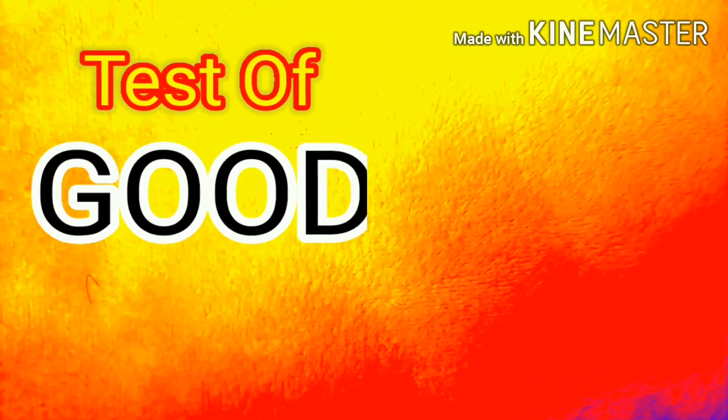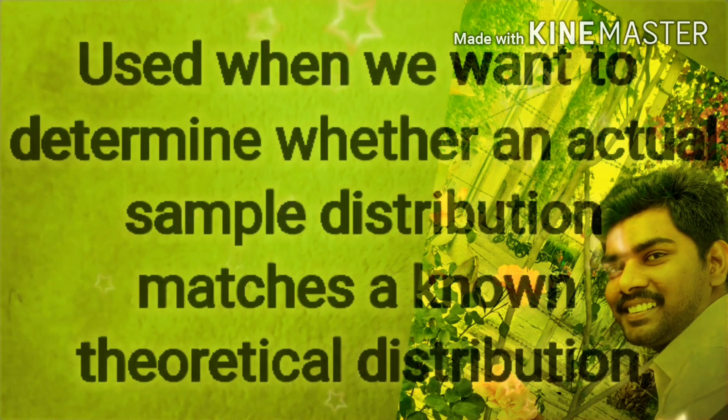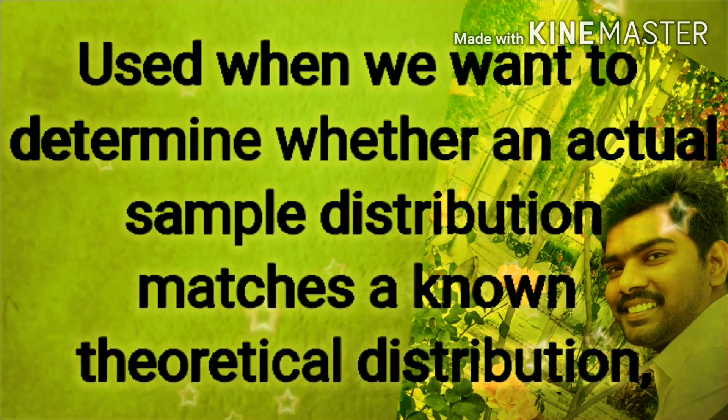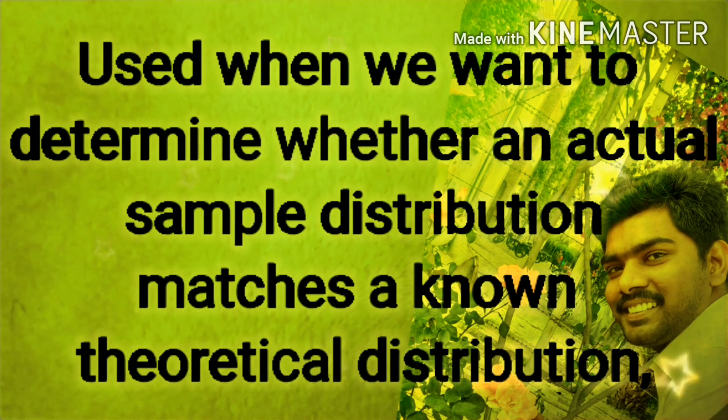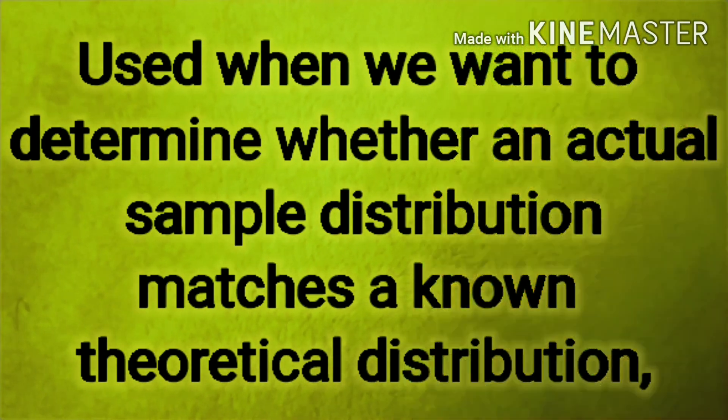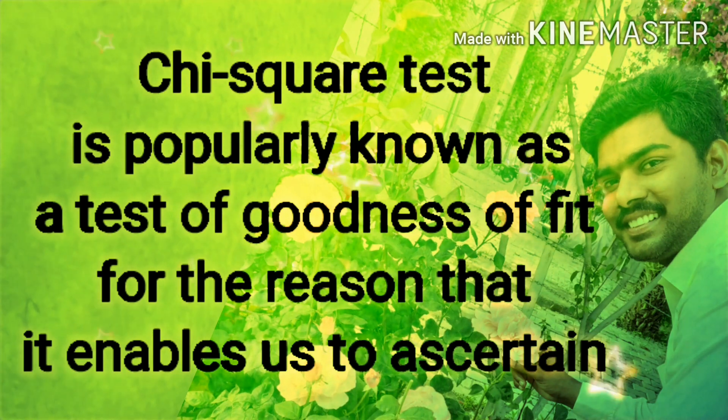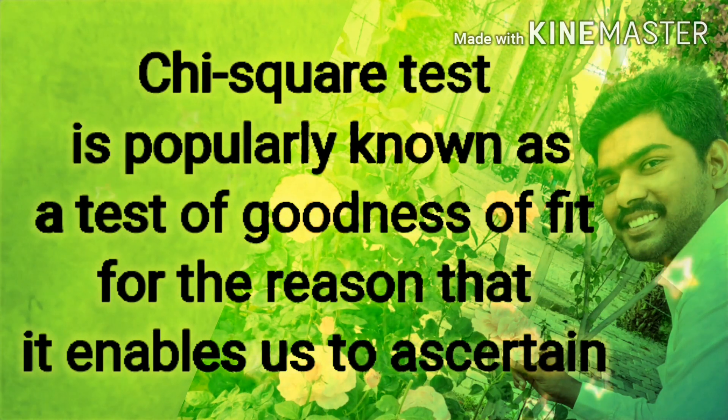Test of goodness of fit is used when we want to determine whether an actual sample distribution matches a known theoretical distribution. Chi-square test is popularly known as a test of goodness of fit for the reason that it enables us to ascertain how well theoretical distributions fit empirical distributions.